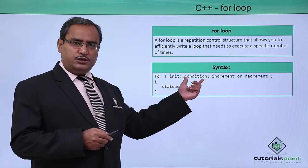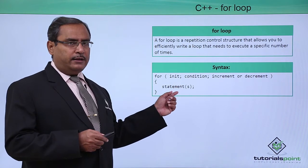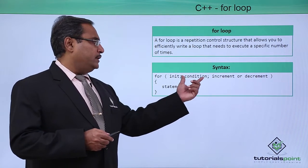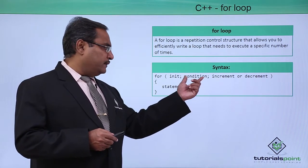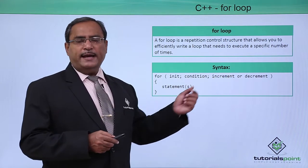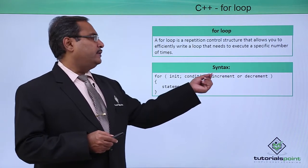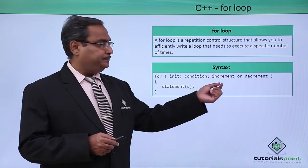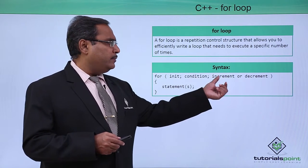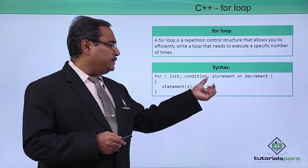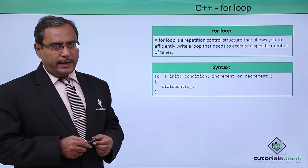In the condition, if the condition is true, then only the control will come in the for loop body. After the condition, we can write some increment or decrement type of expressions. Condition and increment or decrement statements or expressions must be separated by a semicolon again.